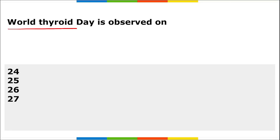World Thyroid Day is annually observed on 25th of May. It is to create awareness about the importance of the thyroid gland — a small butterfly-shaped gland in front of your neck — and to educate the general public about thyroid disease.